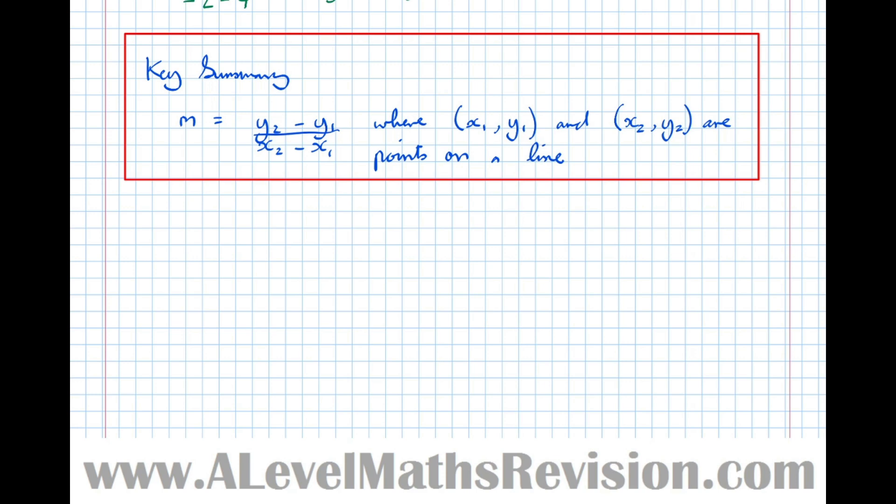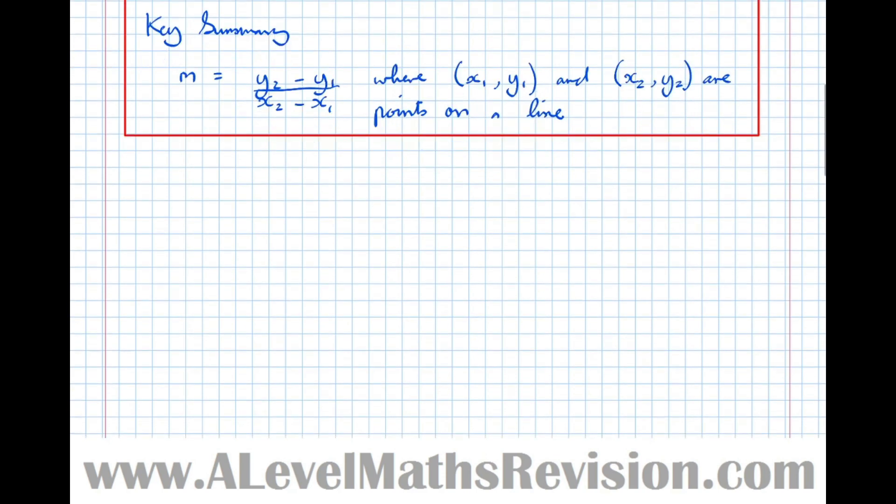Let's now move on to finding the gradient in other ways. Let's look at the form y equals mx plus c of a line. Y equals, let's say, 3x plus 2. This number here is the gradient of the line, and this number here is the y-intercept.